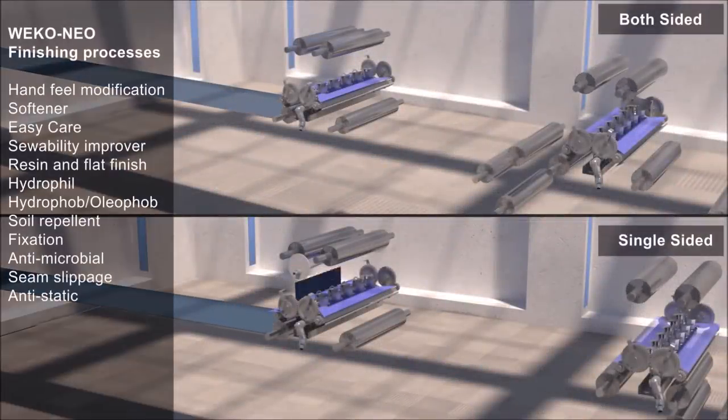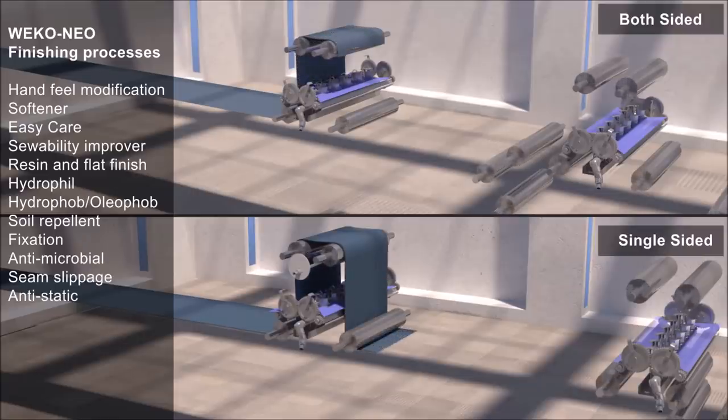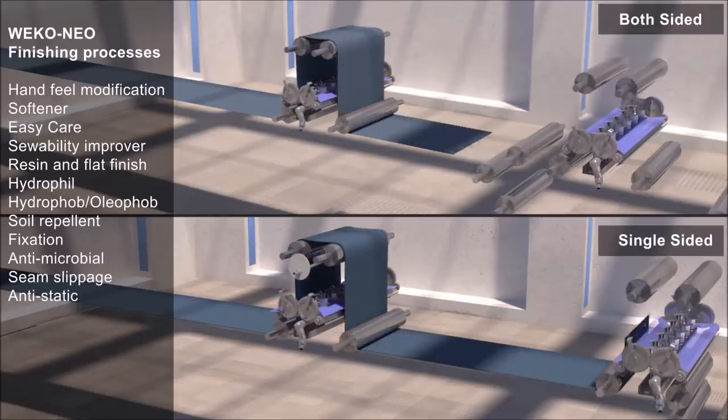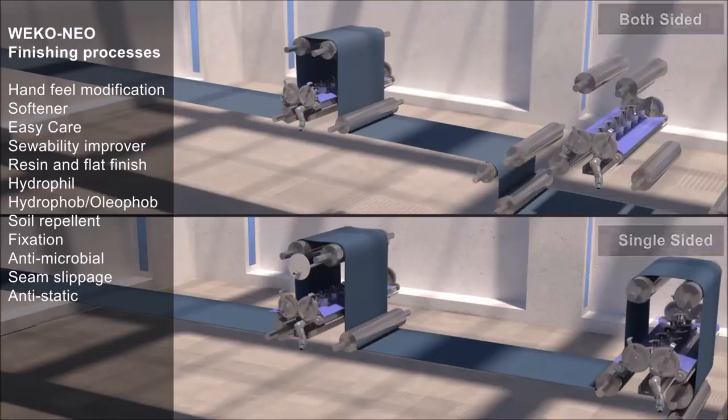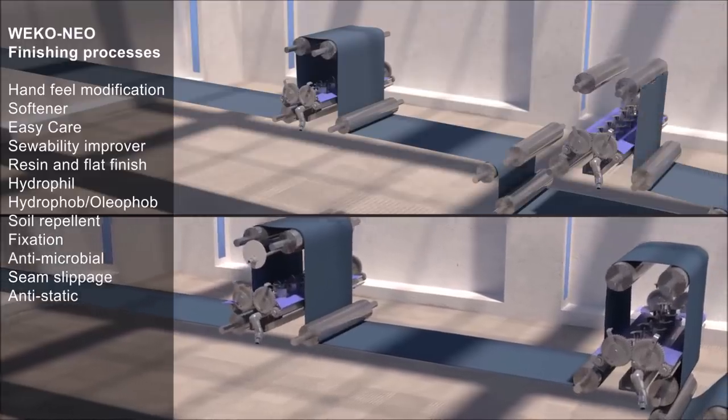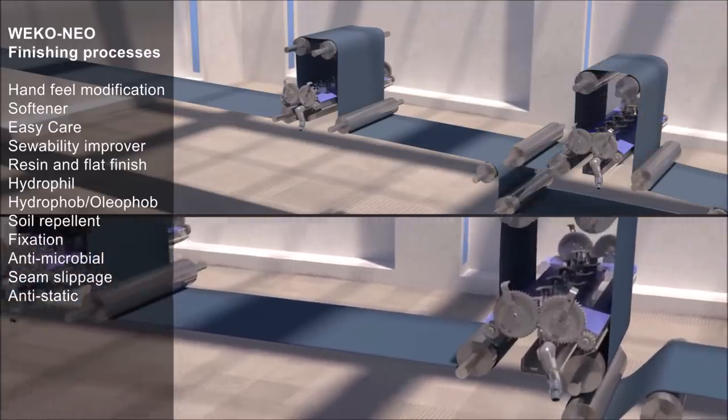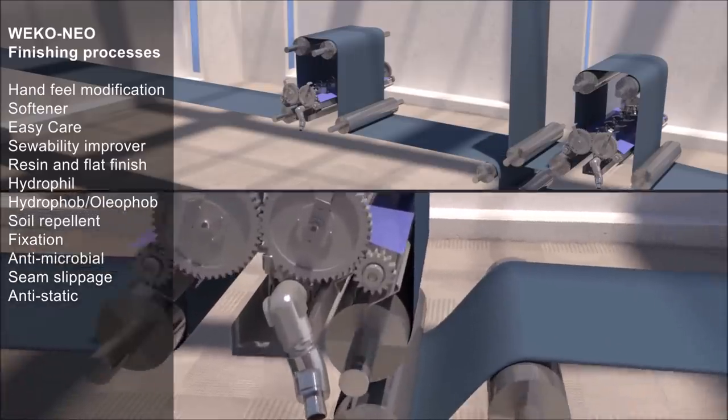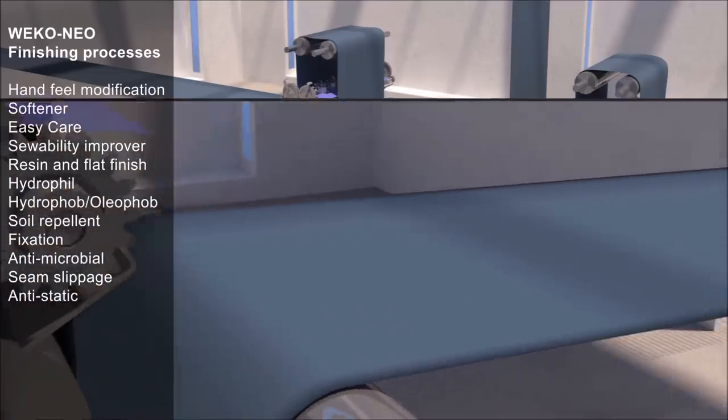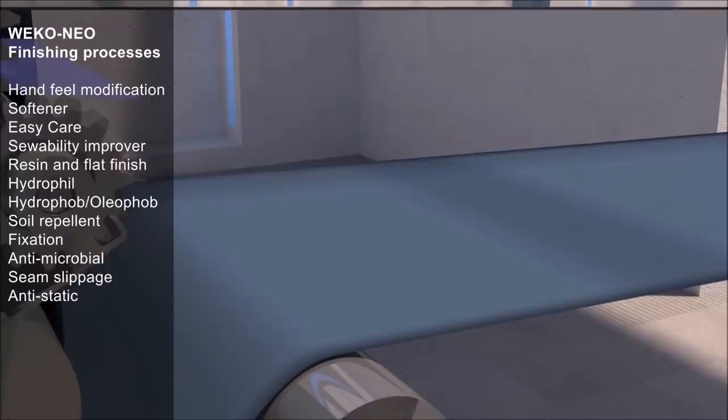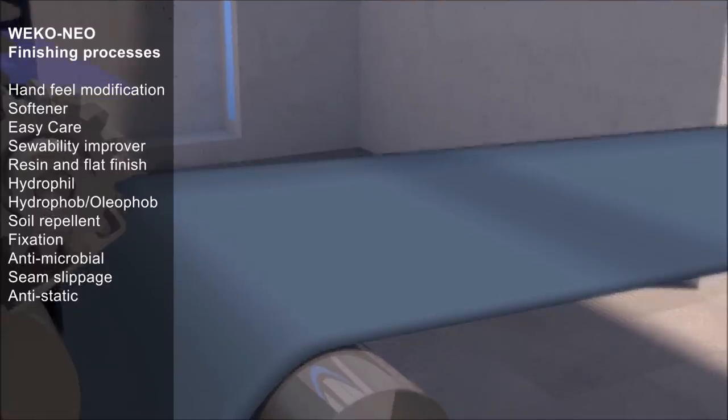Weco Neo finishing processes include hand feel modification, softener, easy care, sewability improver, resin and flat finish, hydrophilic, hydrophobic, oleophobic, soil repellent, fixation, antimicrobial, seam slippage prevention, and antistatic treatments.